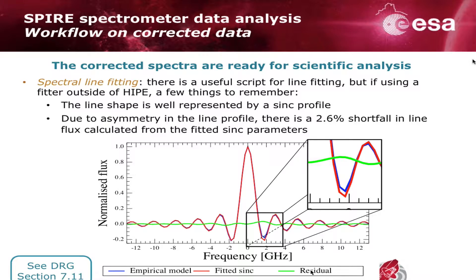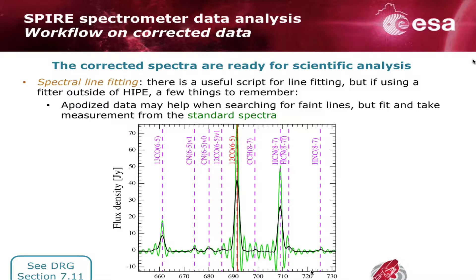Now a quick note on spectral line fitting. Once your data has been corrected, it's ready for analysis, and one thing you might want to do is measure the line flux. A few things to remember: the line shape is a good sinc shape, but it's not perfect — we have a 2.6% shortfall if you fit a sinc. That's something to remember when line fitting. Also, you could use Apodized data to help find faint lines. Here is an Apodized spectrum — the black line over the standard data, which is the green. For each of the known lines there's a bump in the Apodized spectrum, but it's not always obvious in the standard data. However, if you are fitting and measuring your line flux, you should do that in the standard data using sinc functions.